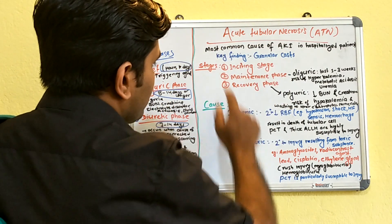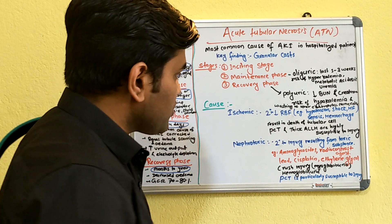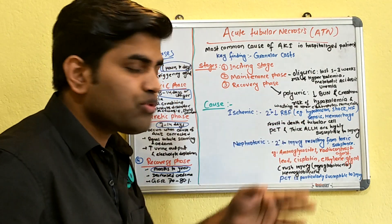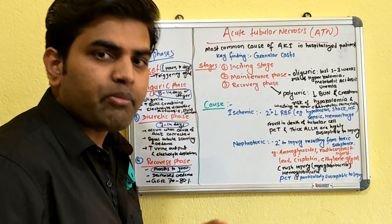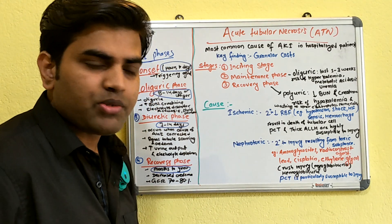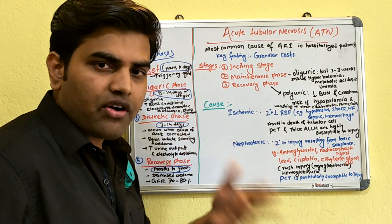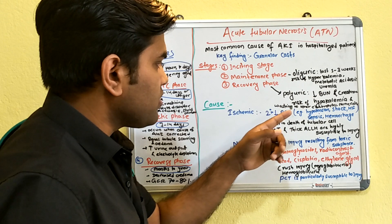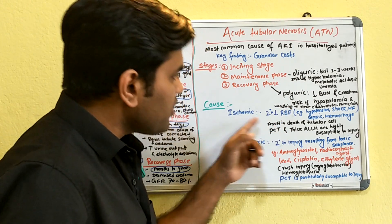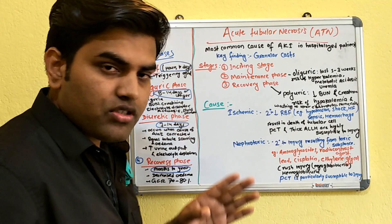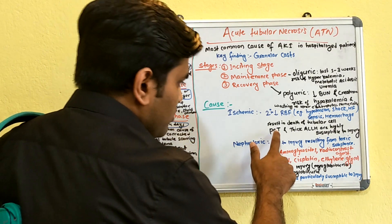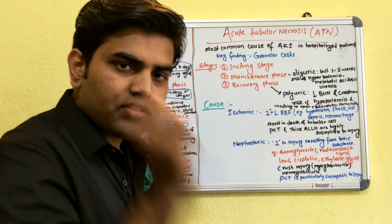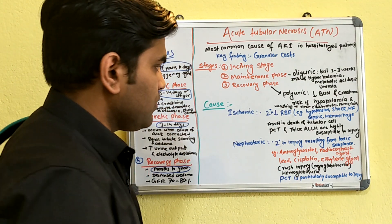Now for the causes of acute tubular necrosis: ischemic is the most common cause. The risk of ischemia is secondary to decreased renal blood flow, which occurs due to hypotension. Patients may be in shock, especially with heart failure, sepsis, or hemorrhage from major surgery - anything that decreases renal blood flow. The depth of tubular cells most highly susceptible to injury are the proximal convoluted tubule and thick ascending limb of the loop of Henle.